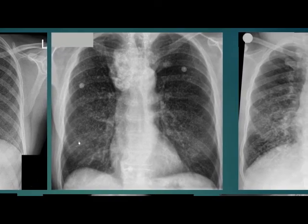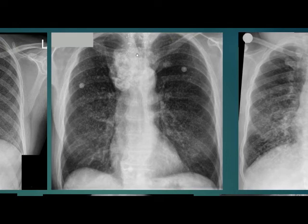In the second case, again there are miliary nodules. We can see an obvious calcified mass in the upper mediastinum and clips in the lower part of the neck. This is a case of thyroid recurrence with miliary metastasis.